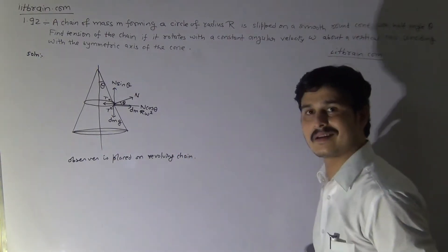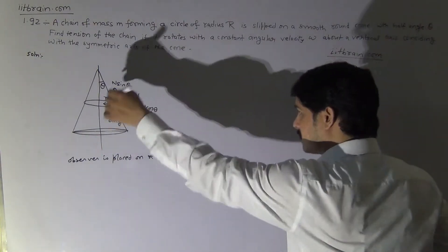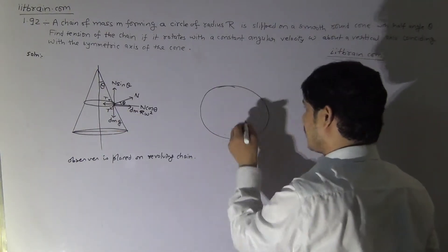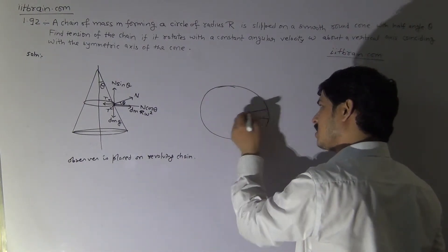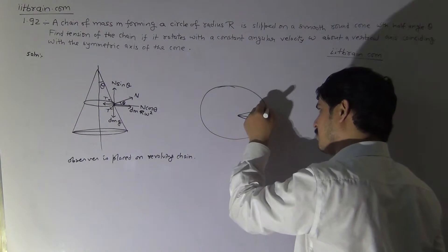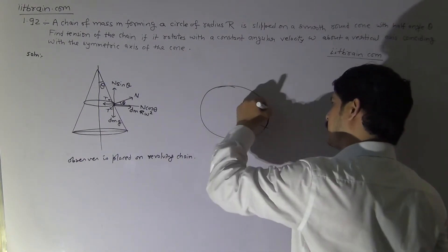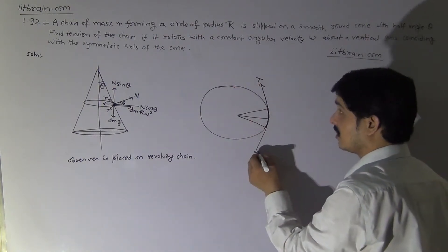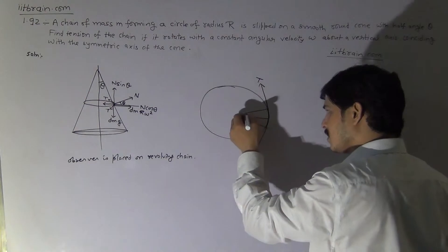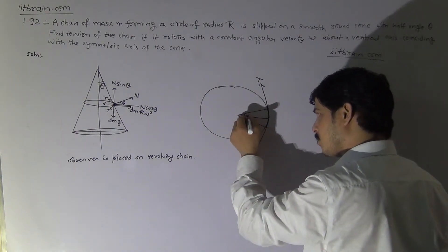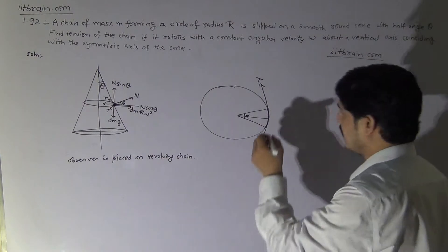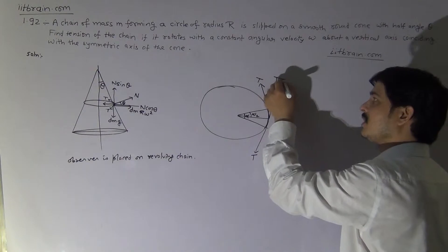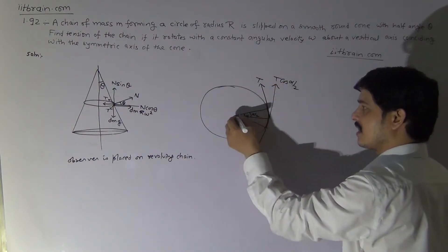To understand the tension clearly, we take a separate diagram of the chain as a circle of radius R. Consider a small segment subtending a small angle alpha at the center. This gives angles of alpha/2 on both sides, so the components of tension at each end are T cos(α/2) and T sin(α/2).